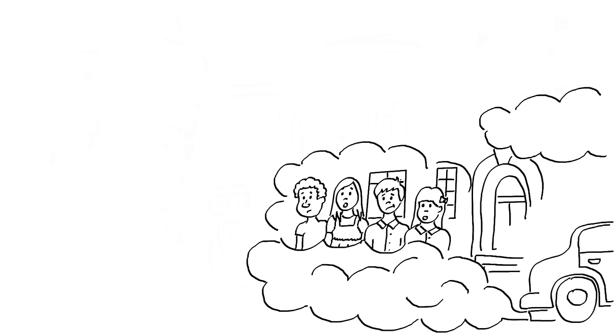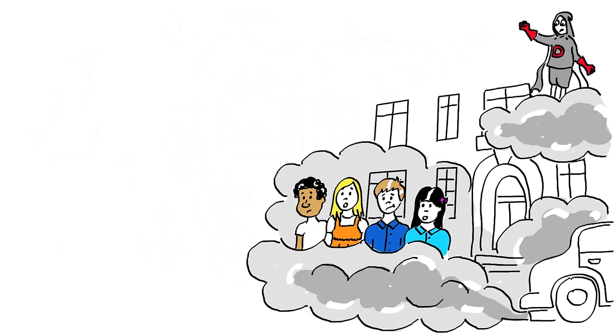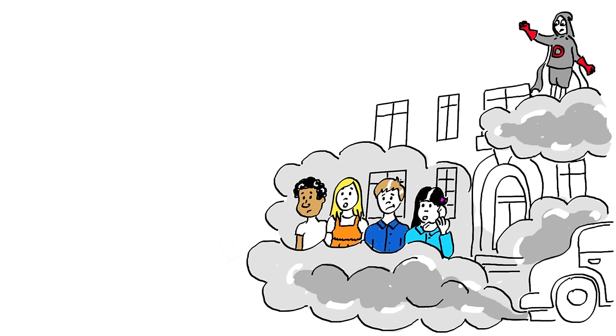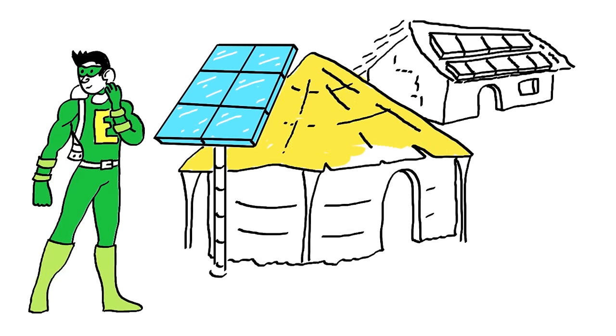At the end of this strange day, the children left school, only to see tons of pollution in the city. Dump It Man was there too, laughing. Ecoman was able to leave his work installing solar panels that brought electricity to a village without lights, and arrived to answer the children's question.